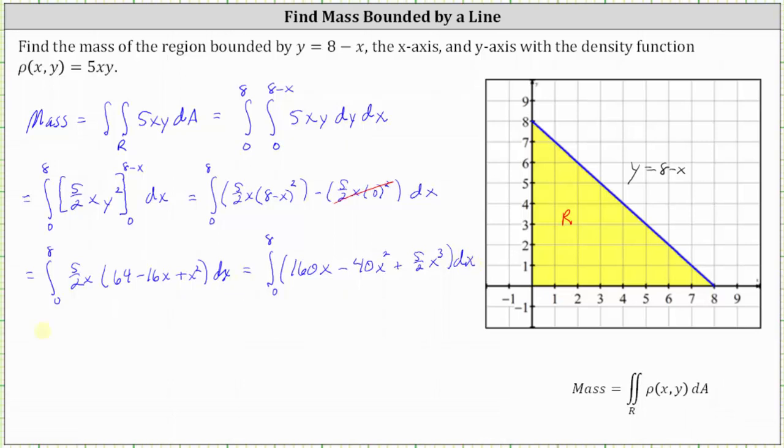Now we integrate this with respect to x. Integrating 160x, we have 160 times x squared divided by 2, or 80x squared, minus integrating 40x squared, we have 40 times x cubed divided by 3, which gives us minus (40/3)x cubed. And then plus we have (5/2) times x to the fourth divided by 4, which gives us plus (5/8)x to the fourth.